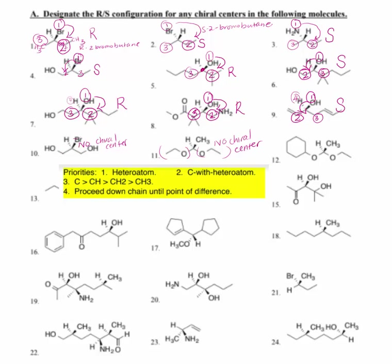Number twelve: I have an oxygen with a cyclohexane ring, an oxygen with an ethyl, a methyl, and a hydrogen. Hydrogen is going to be number four and it's to the rear. Here's oxygen — I need to find my atom of difference. This is a CH, and here this is a CH2. CH being greater than CH2, this becomes CIP priority number one. This is number two, and methyl is number three. We are rotating counterclockwise with H to the rear, which makes this an S configuration.